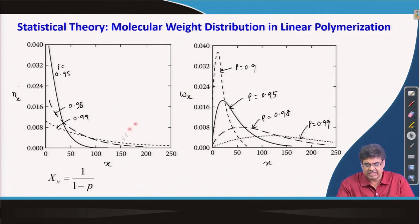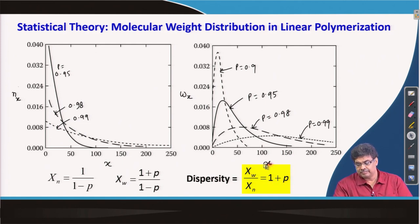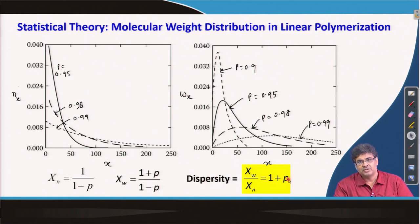For the simple 1:1 molar ratio case, X_n is given by one expression and X_w — the weight-average degree of polymerization — is given by another. The dispersity value, or polydispersity index, is always given by (1 + p). For a high molecular weight step polymer, p is close to 1, so the dispersity should always be close to 2.